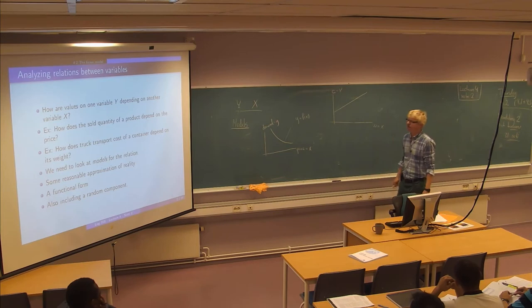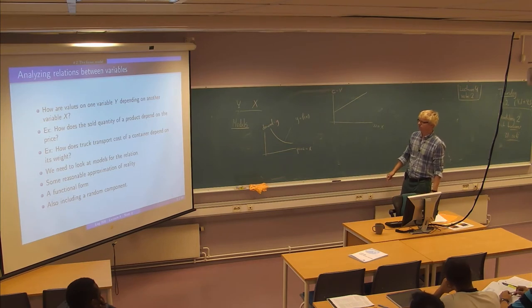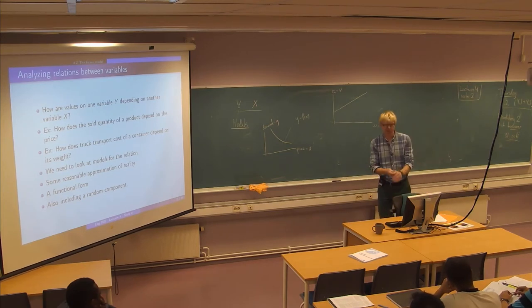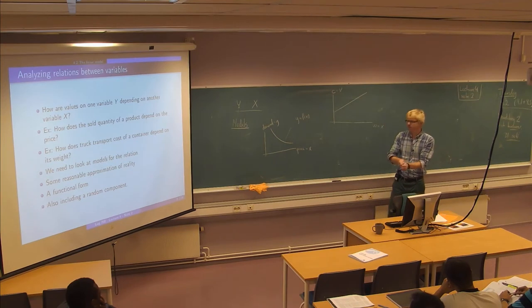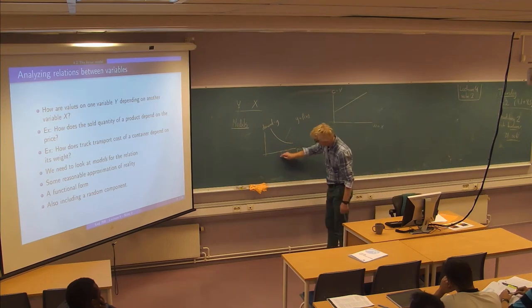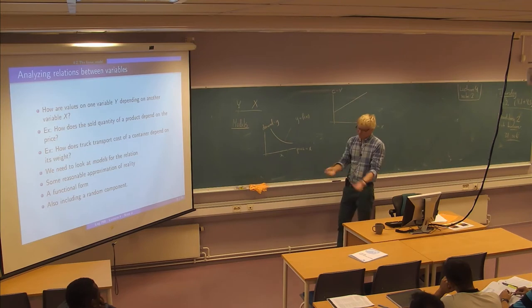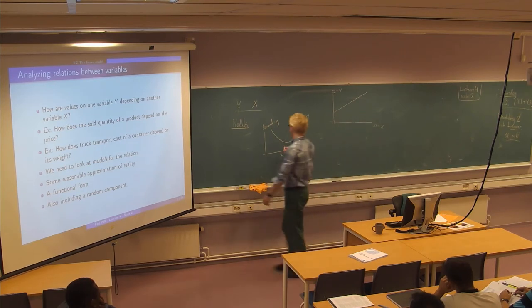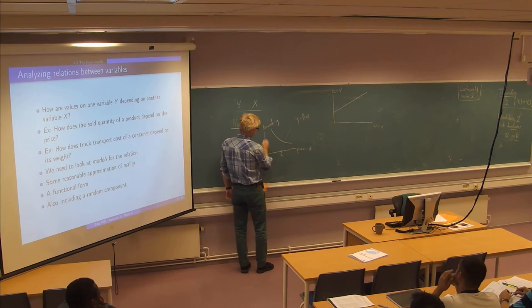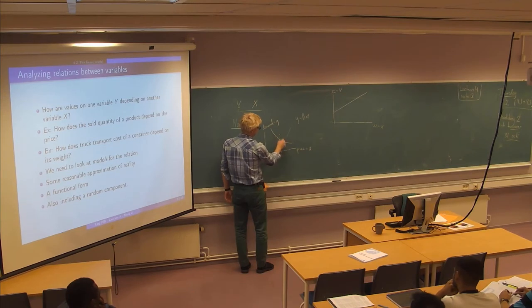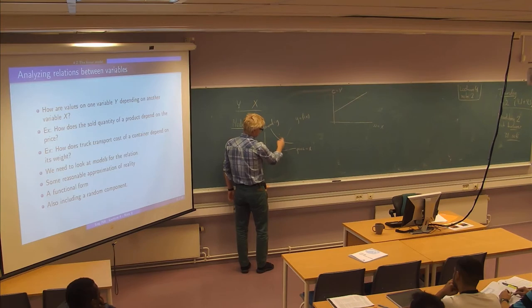But we know in reality there will almost always be additional randomness. So if I put my price here, I can have this model as a sort of guideline but I know that supposing this is the monthly demand or something, I realize that the actual sold quantity could be here, it could be here, here, here, somewhere around this curve, right.